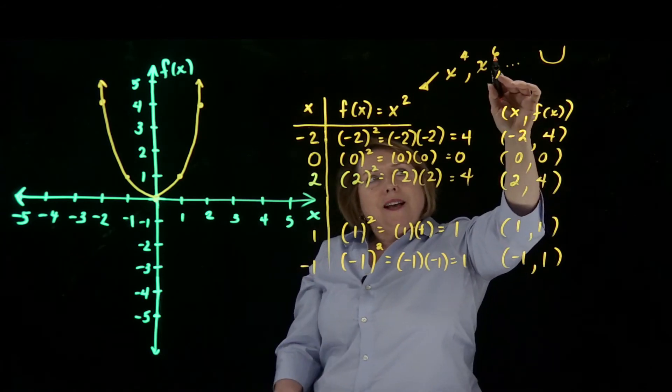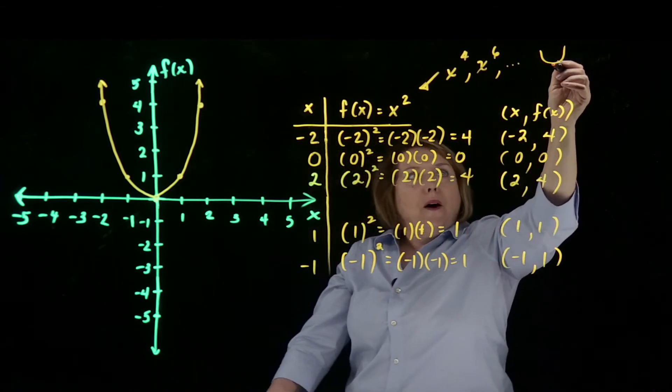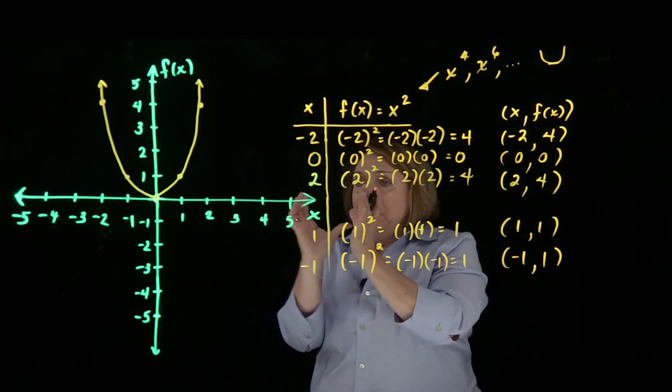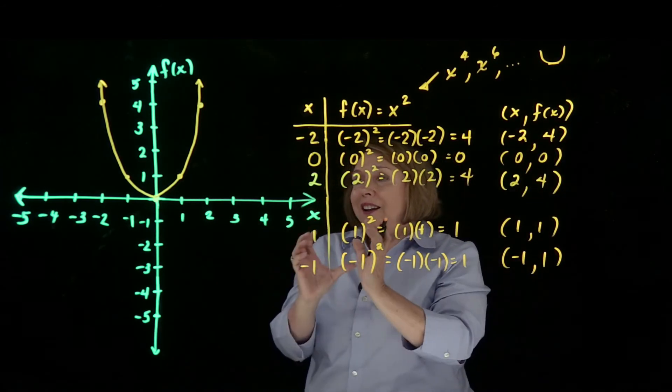What happens as the exponent gets larger is that the bottom of the u gets wider and flatter, so it becomes more like a cup sitting on a table.